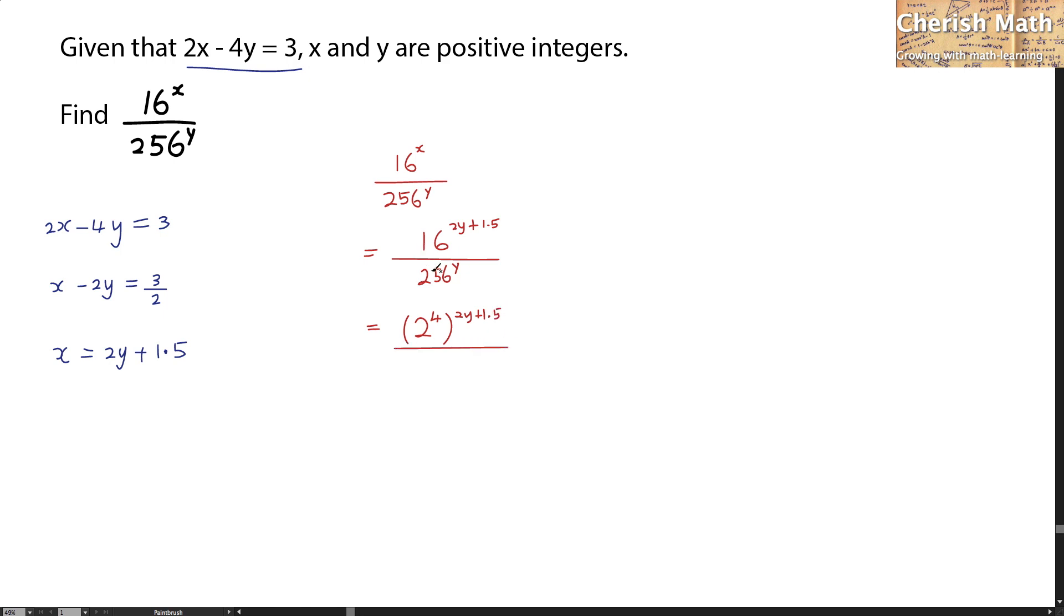And on top of it, 2y plus 1.5 is the original power, divided by 256, which is in fact 2 to the power of 8, and on top of that is the power y.